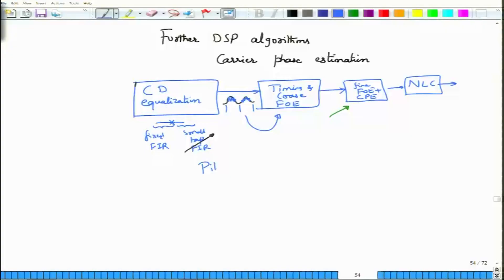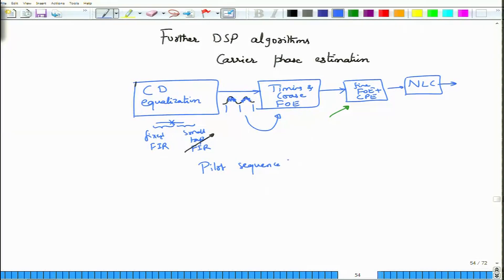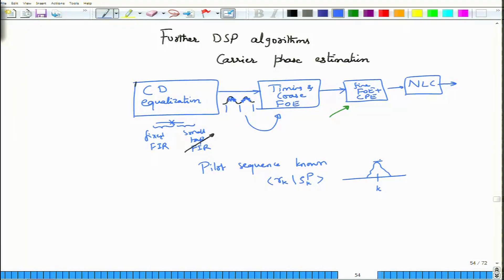Usually what you do is send out a pilot sequence and detect this pilot sequence or a frame header. Once you detect it, you take the received samples and correlate them with the pilot sequence, which is known to both transmitter and receiver. Correlation is essentially taking the inner product. When you do this correlation, you will see that at some particular value of K it is maximum, and that would be the appropriate time to sample the signal.